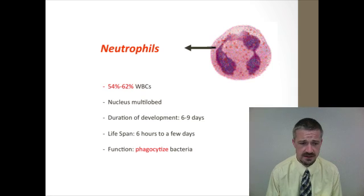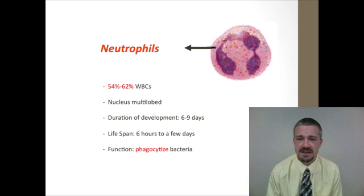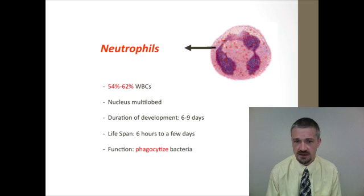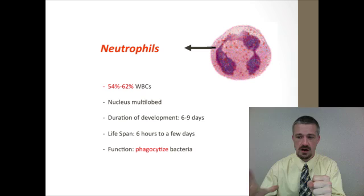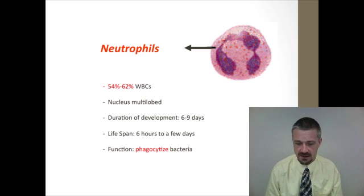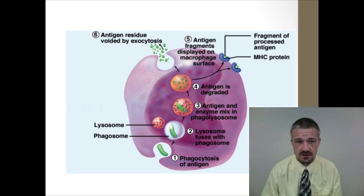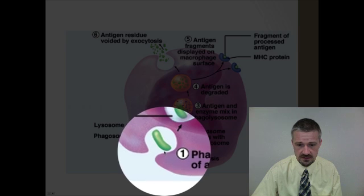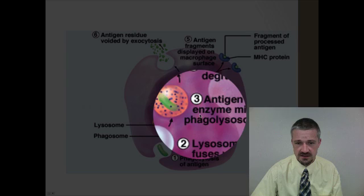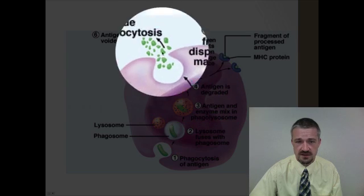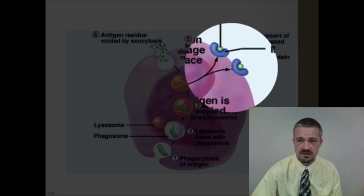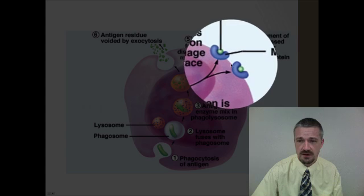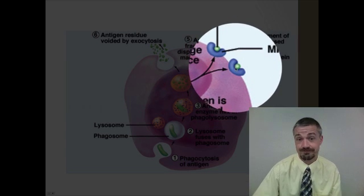Neutrophils can circulate for a few hours up to a number of days. Their main job is to be a phagocyte of bacteria — a rather picky eater. They engulf, digest, and break down bacteria by fusing with the lysosome. They may also present parts of antigens to alert the rest of the immune system.